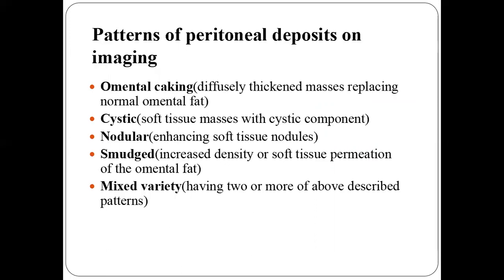Patterns of peritoneal deposits include omental involvement, demonstrated as diffusely thickened mass replacing normal omental fat; cystic masses, which are soft tissue masses with a cystic component; nodular enhancing soft tissue nodules; smudge or soft tissue permeation of the omental fat; and a mixed variety having two or more of the above features.